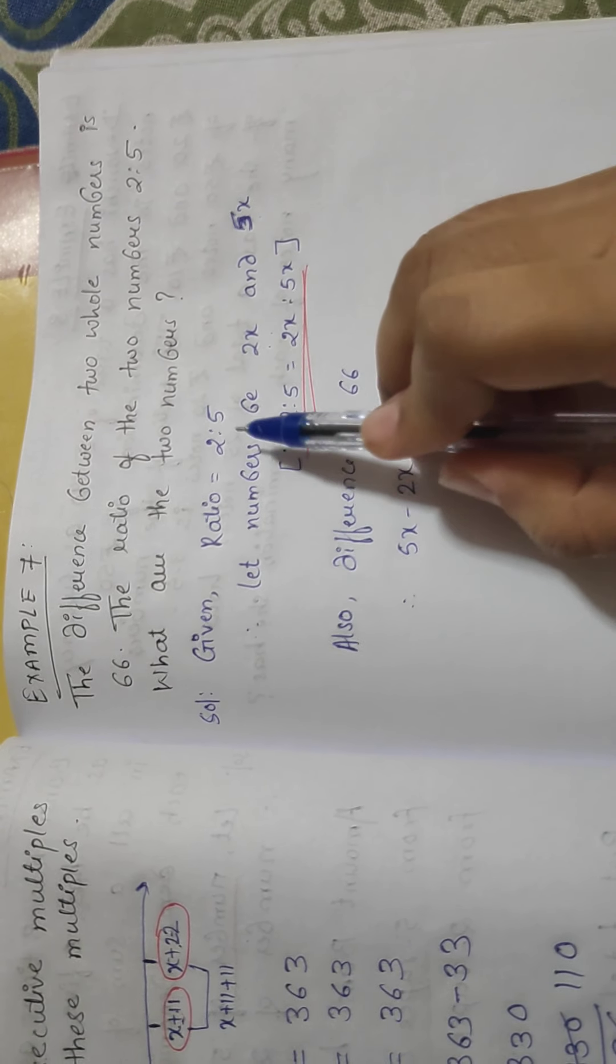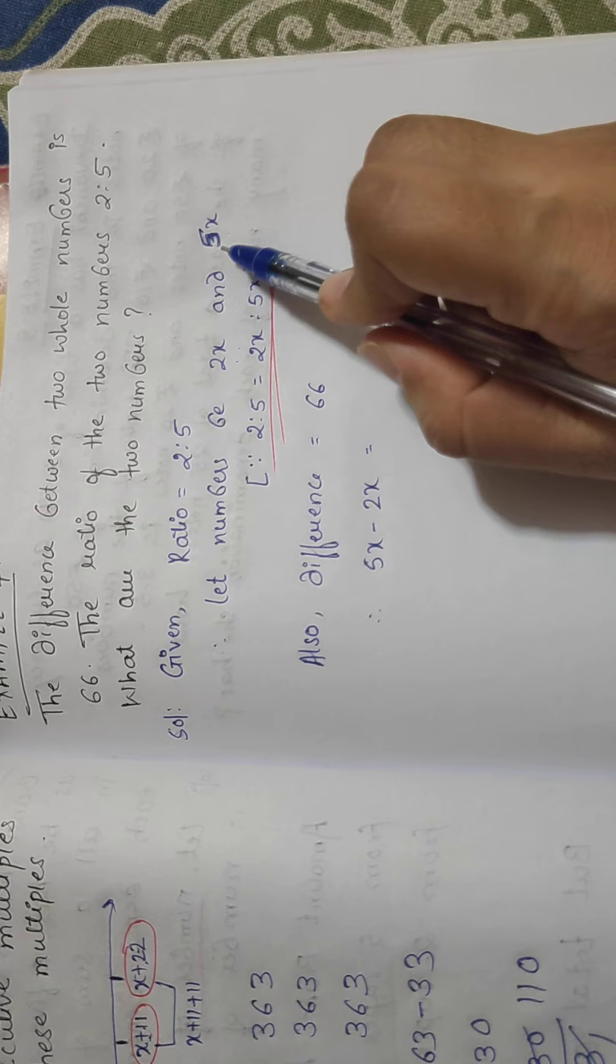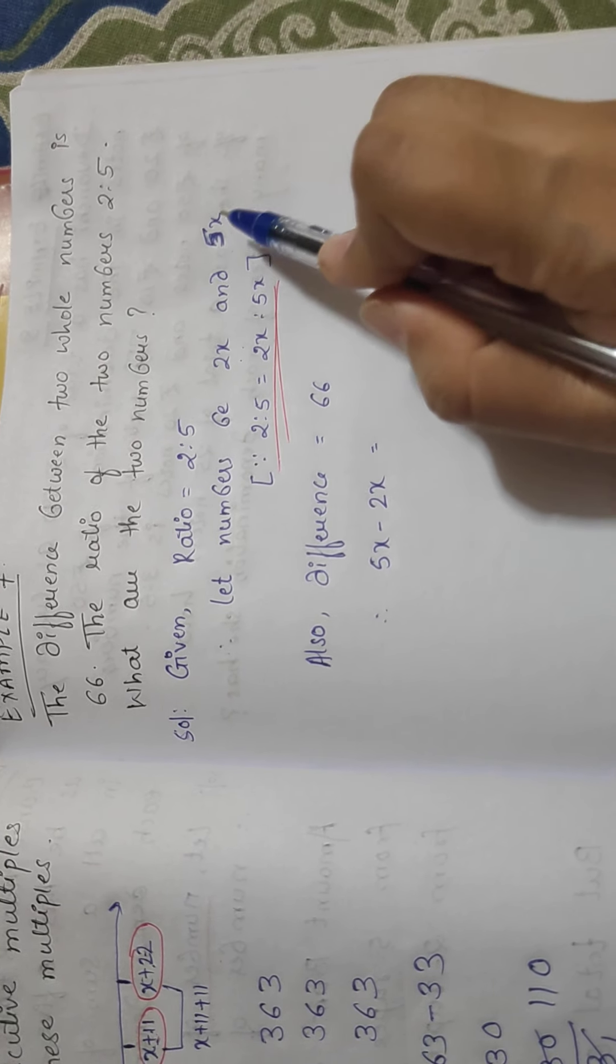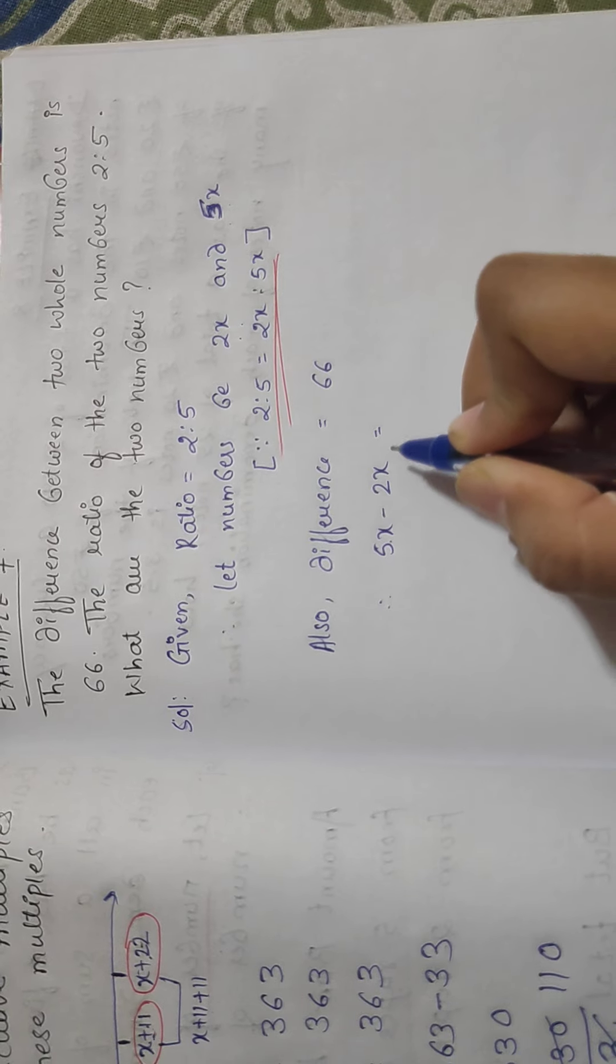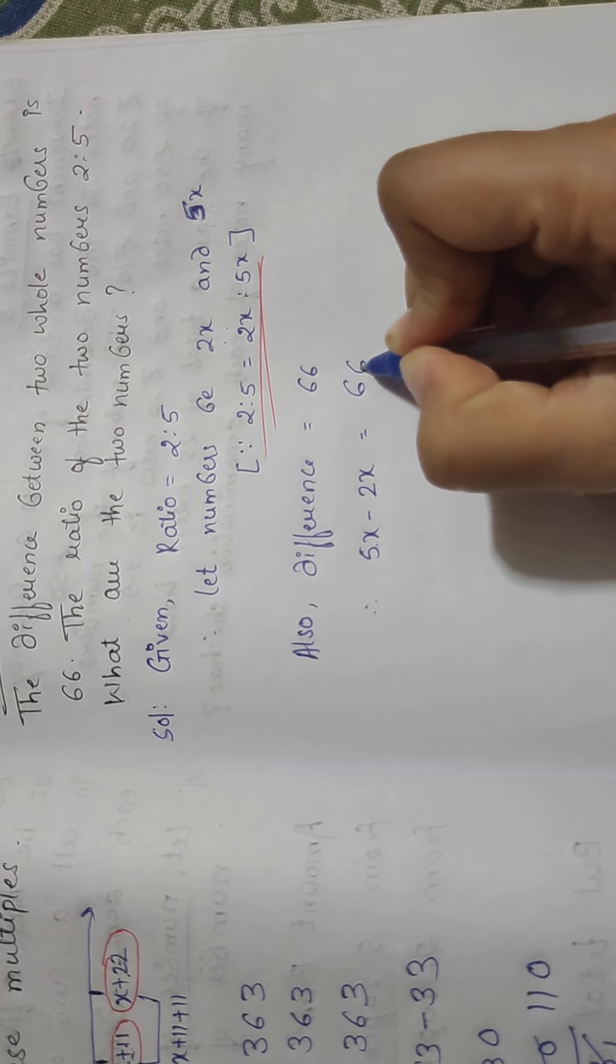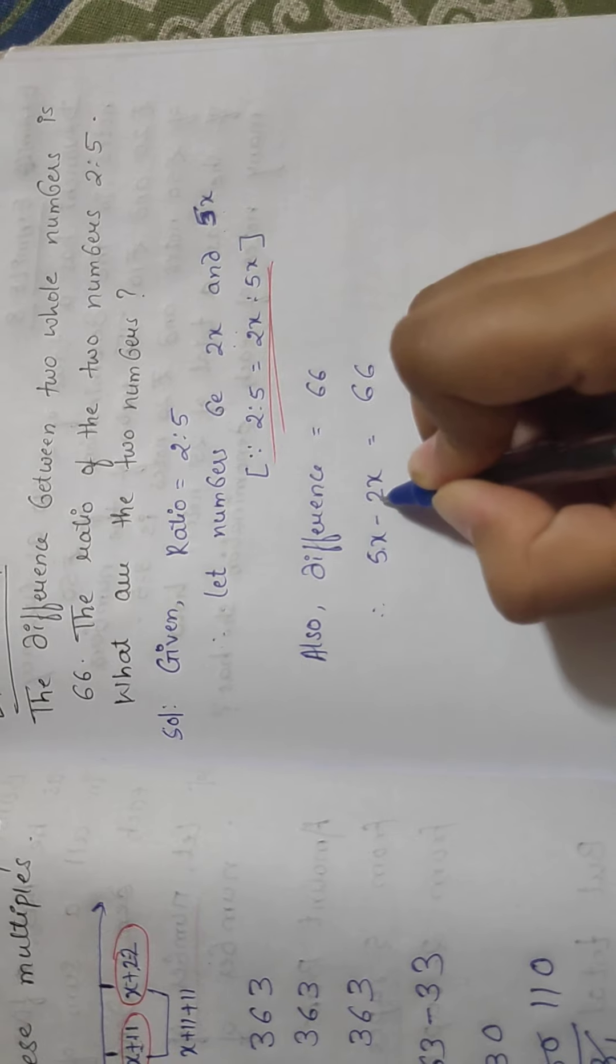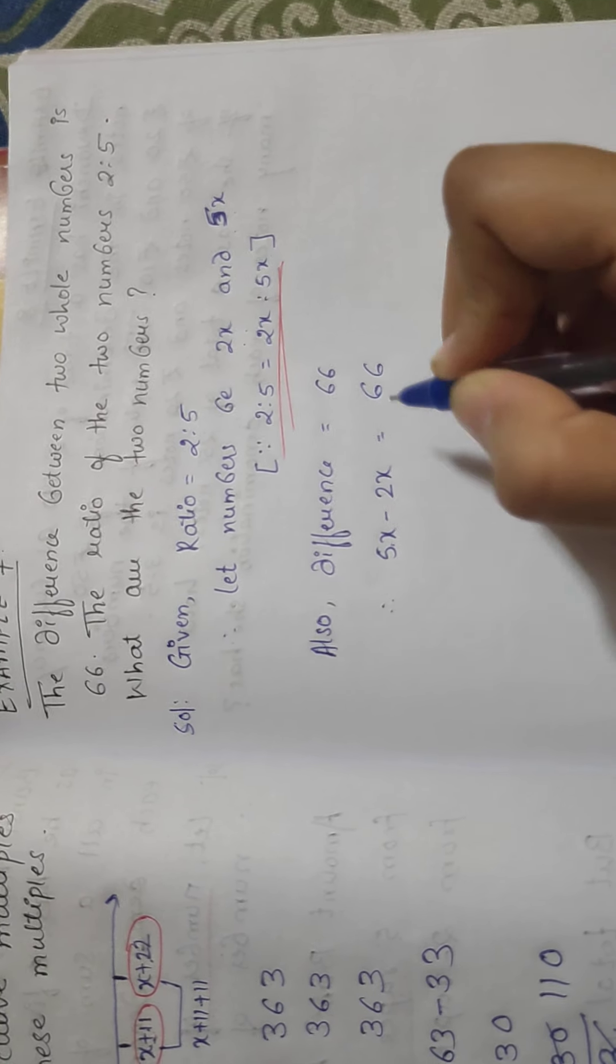So here from ratio we can write down the numbers by taking common multiple. So here we can say that 5x minus 2x is nothing but 66. Difference between two numbers, they have given it is 66.